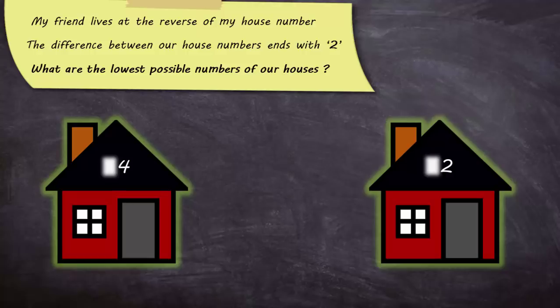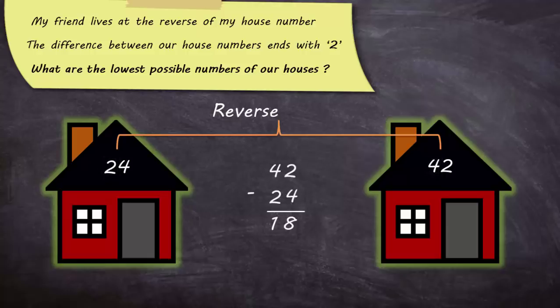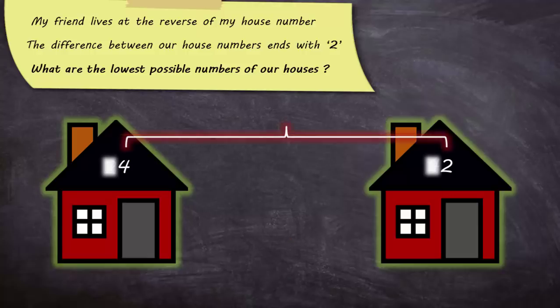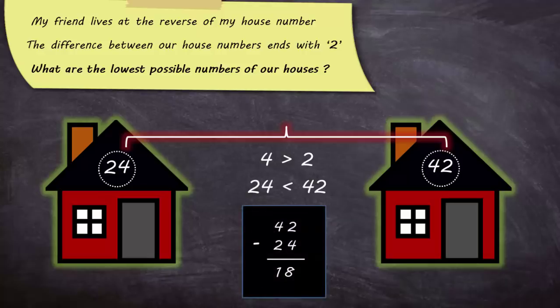But the problem here is that the house numbers are reverse of each other. So, the digits at 10th place should be 2 and 4 respectively. So, the difference will never end with 2. The reason is that if one house number has greater value of units place, then its complete number will be smaller than the other house number, which ultimately involves borrowing while subtraction. And we can't get the output ending with 2.